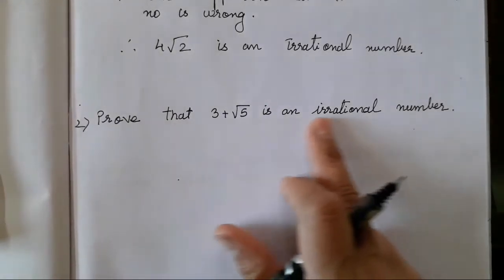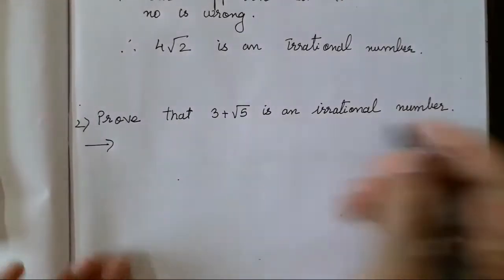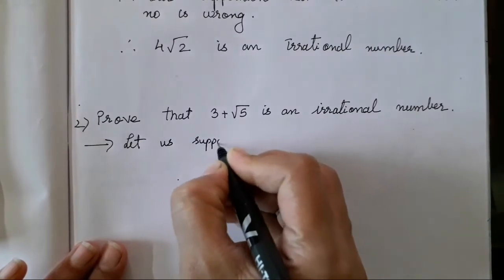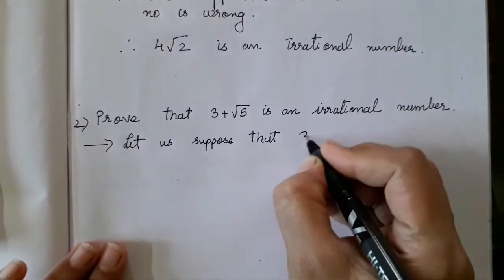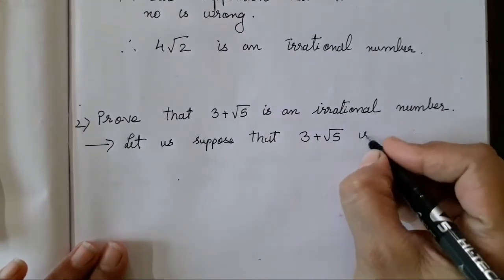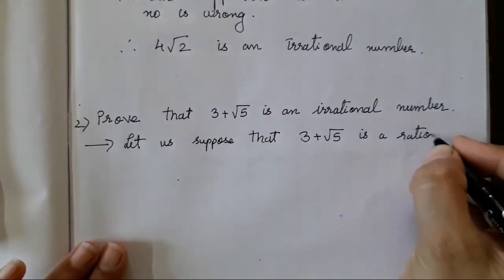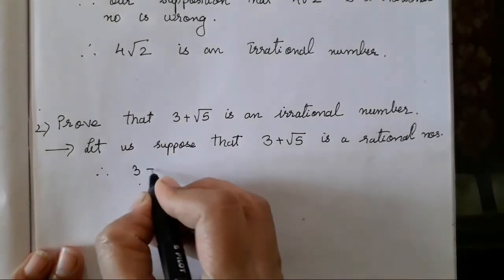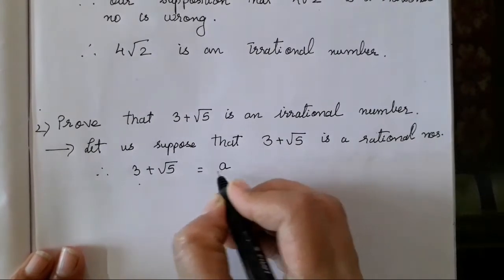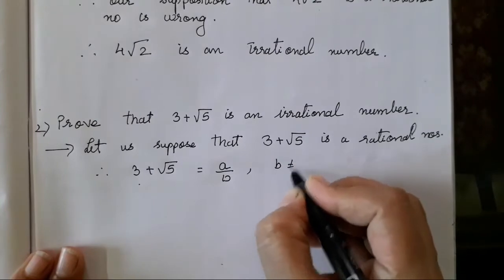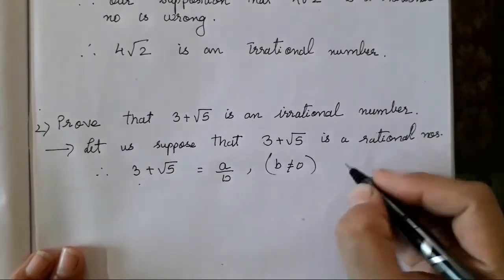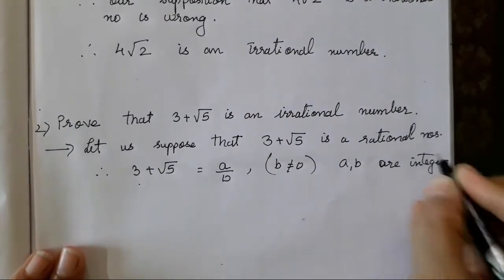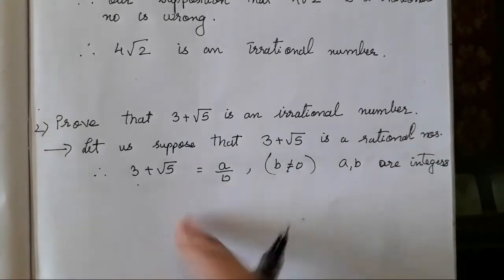Now let's move to the next question: prove that 3 + √5 is an irrational number. We have to prove it is irrational again using the same steps. Let us suppose 3 + √5 is a rational number. Therefore, 3 + √5 = A upon B, where B is not equal to 0, and A, B are integers. You will see the same sentence we wrote in the first question — only the question has changed.